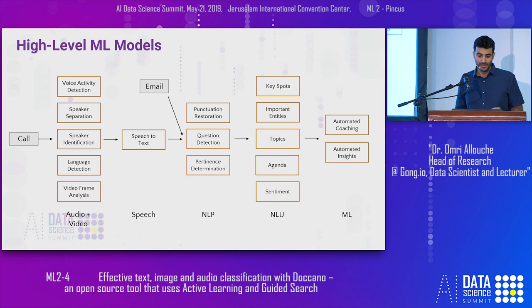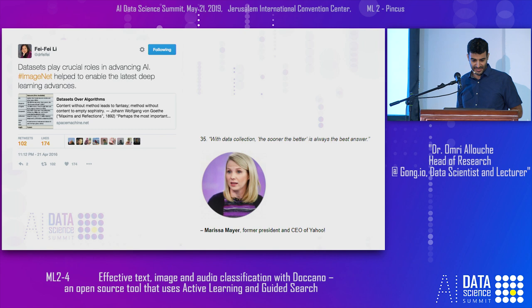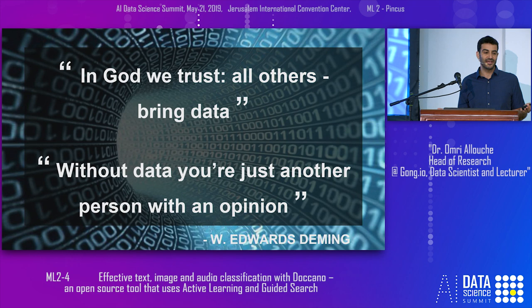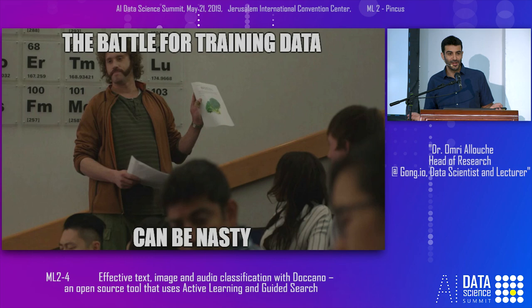We know that data sets are very important. As Fei-Fei Li says, data sets play a crucial role in advancing AI. Marissa Mayer says that with data collection, the sooner the better is always the best answer. We understand that data is important, but getting data is not obvious for a specific domain. As we all know, the battle for training data can be nasty.